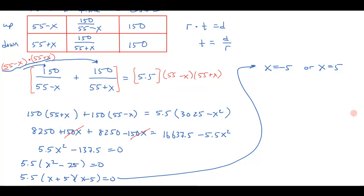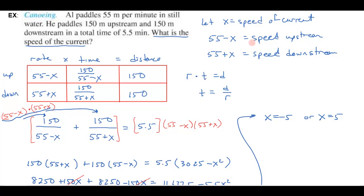Remember, we set up that x is the speed of the current. Negative 5 isn't going to be a good speed of the current. Usually speed is positive. So in this case, it looks like this would be our answer. So the speed of the current is 5. And what was the units here? Meters per minute.